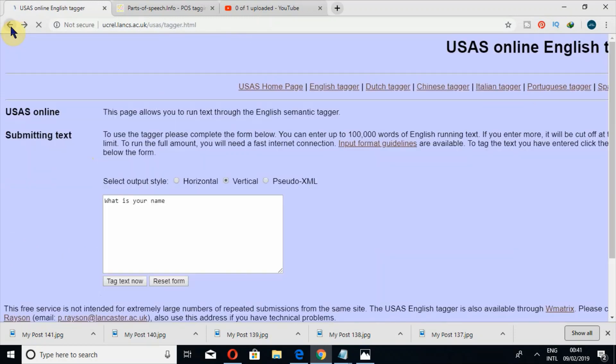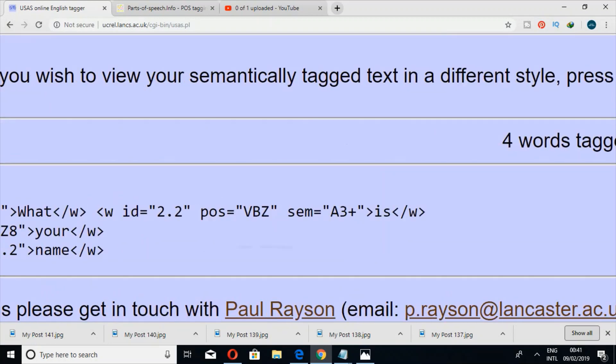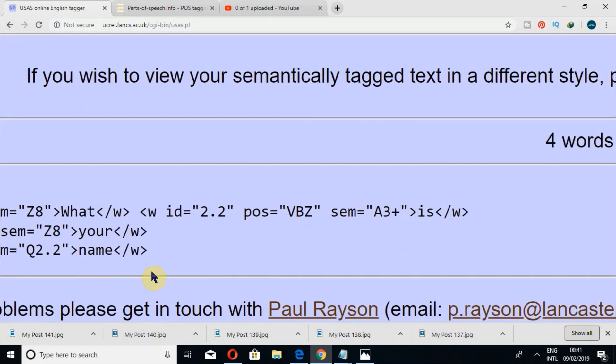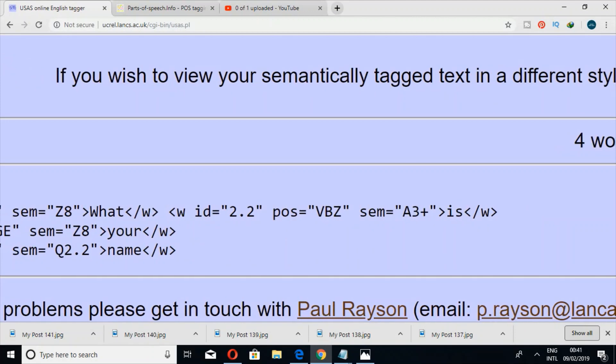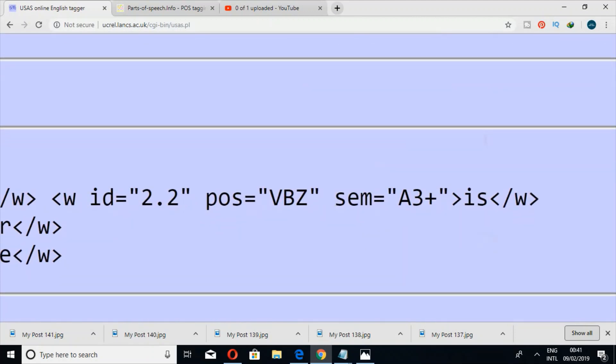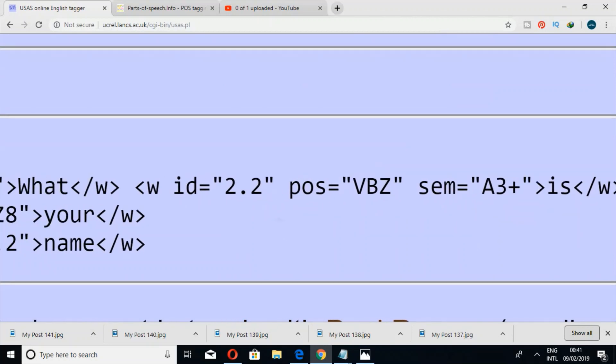If I click on pseudo XML and then press Tag Text Now, in this way now you can see VBZ, which is a POS tagger, parts of speech tagger. Now in this way it has tagged your data both semantically and both parts of speech.